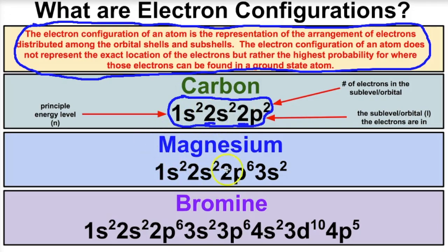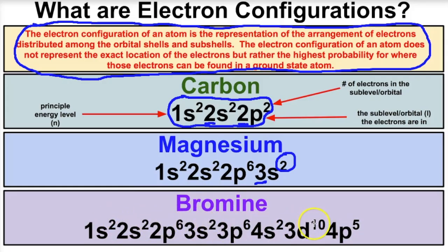For magnesium, the third energy level is the highest, and there are two electrons there, so magnesium has two valence electrons. Its electron configuration is 1s2, 2s2, 2p6, 3s2. For bromine, the electron configuration accounts for all its electrons. At the fourth energy level there are two electrons in the s sub-level and five in the p sub-level — a total of seven valence electrons. Bromine is in group 17, confirming seven valence electrons.